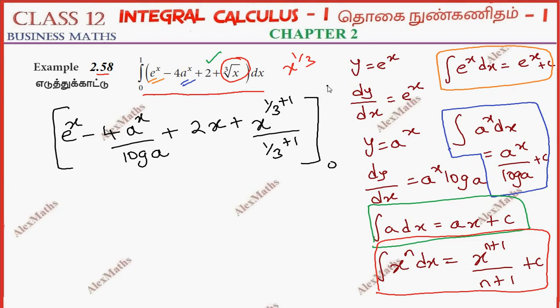Limit 0 to 1, substitute. Straight away upper limit substitute, this is e power 1 minus 4 a power 1 by log a plus 2, this is the upper limit, all x substitute to 1.